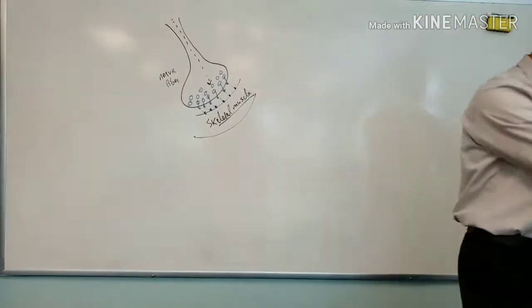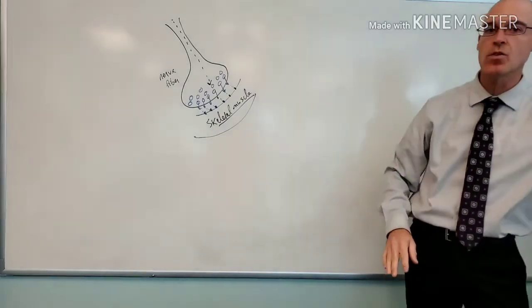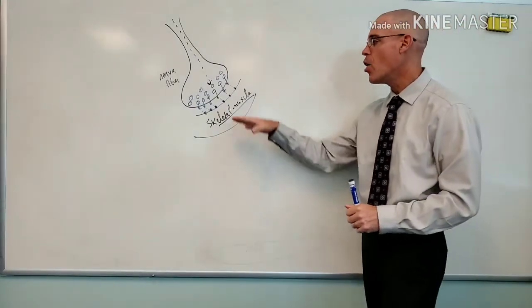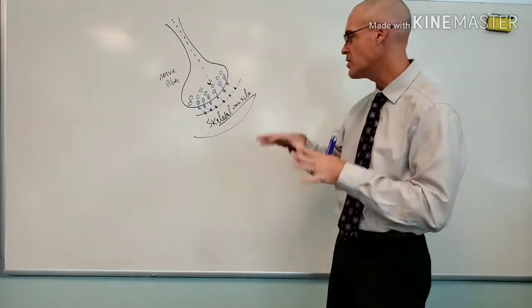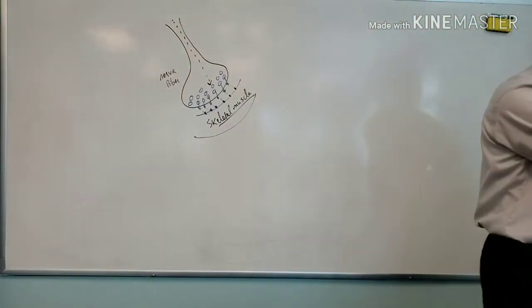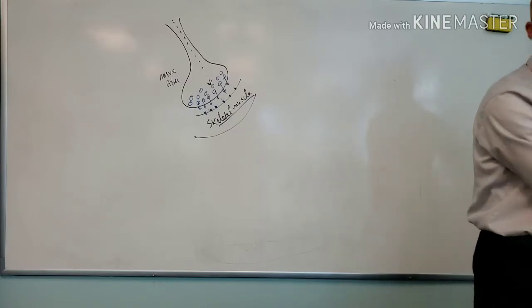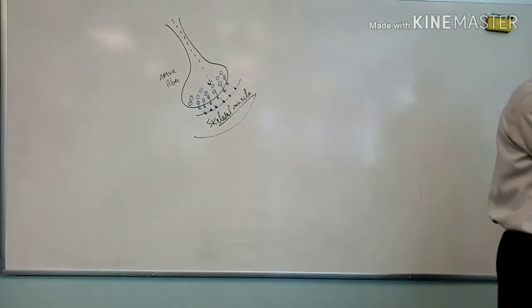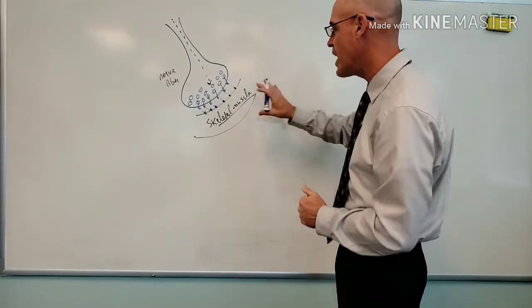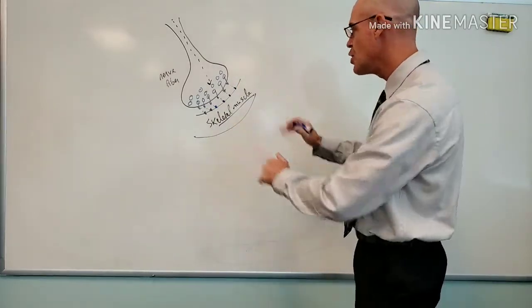When acetylcholine, or ACh, binds to the receptor, that is going to trigger the opening of the sodium gates. That's the first thing that's going to happen — the opening of the sodium gates — and that is what will trigger the stimulation of the skeletal muscle.